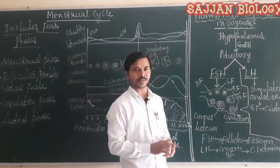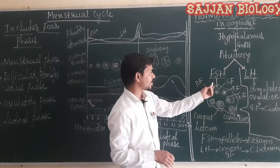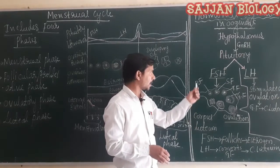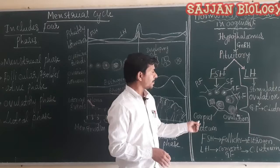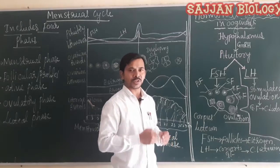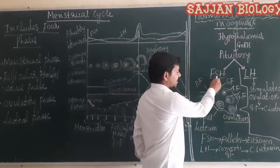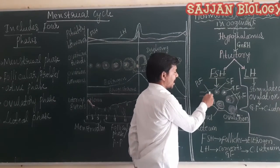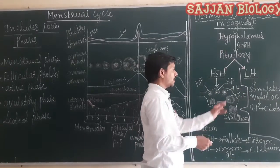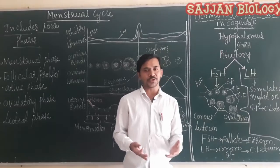FSH is secreted by the pituitary gland and starts to act on follicular cells. FSH converts the primary follicles into a Graafian follicle. Along with this, the follicular cells start to secrete a hormone called estrogen. FSH acts on the primary follicles, the follicular cells keep on growing and convert into a Graafian follicle, and these follicular cells start to secrete estrogen hormone.